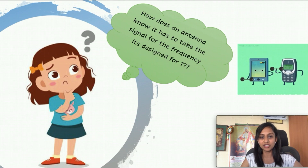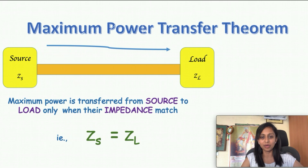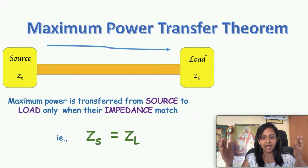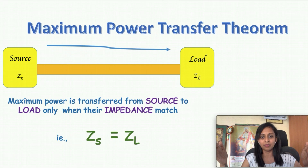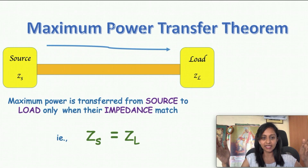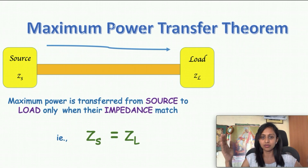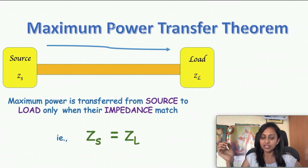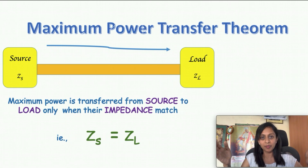Before we go into this concept, there is something we need to recall: the Maximum Power Transfer Theorem. It says — I have a source, I have a load, and the transmission medium might be wired. When I have such a setup, the Maximum Power Transfer Theorem says that if maximum power needs to transfer from source to load, the impedance between these two should be matched. Assuming source impedance Zs and load impedance Zl, they must match for maximum power transfer.